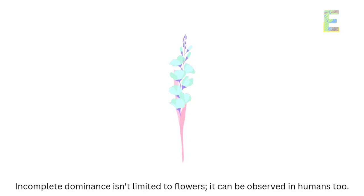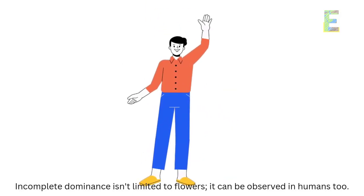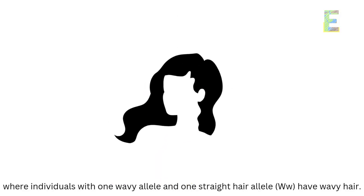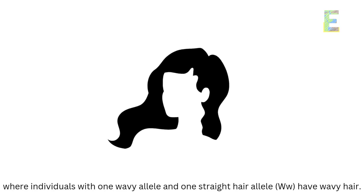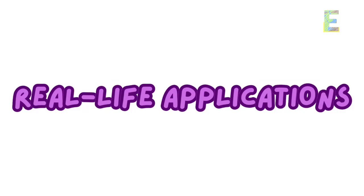Incomplete dominance in humans: incomplete dominance isn't limited to flowers; it can be observed in humans too. One example is the inheritance of wavy hair, where individuals with one wavy allele and one straight hair allele have wavy hair.